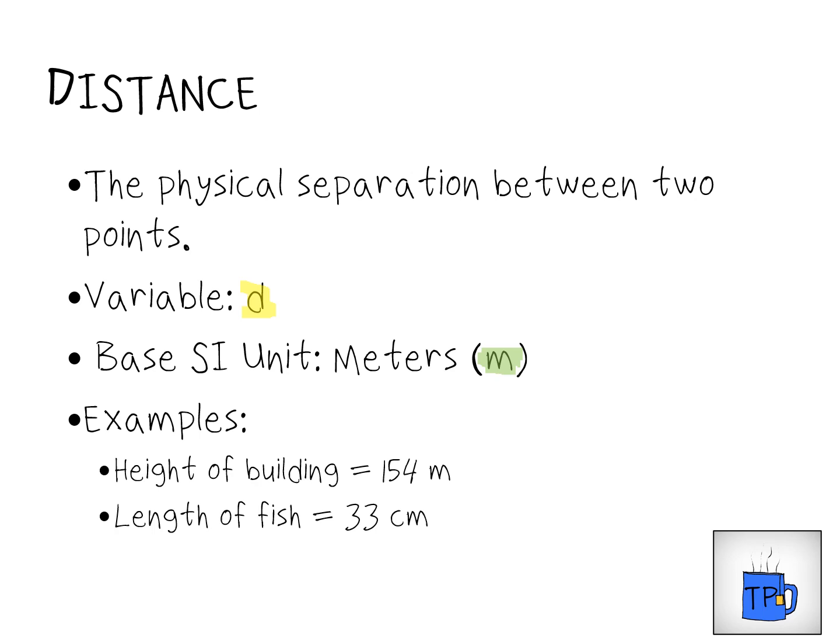Examples of this in action: we could talk about the height of a building as being 154 meters, or the length of a fish being 33 centimeters. Those provide all the information we need. We understand that the height of the building means from its base to its top. Generally speaking, our understanding of distance is pretty intuitive, although sometimes it is not enough depending on what we actually want to describe.